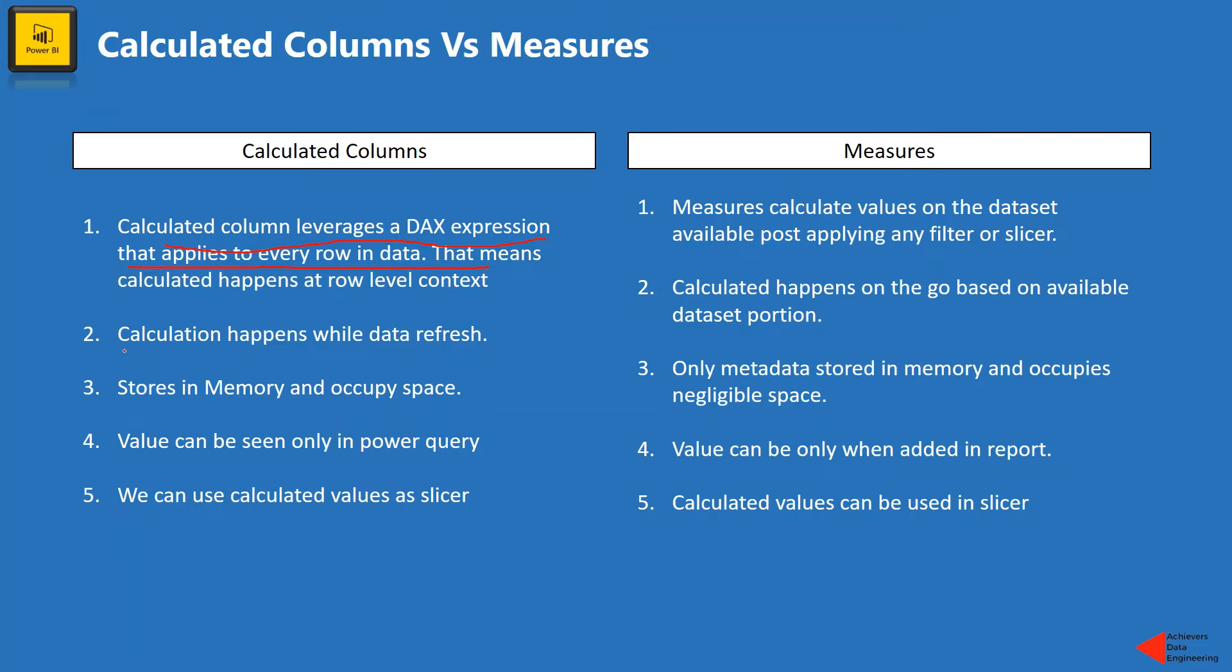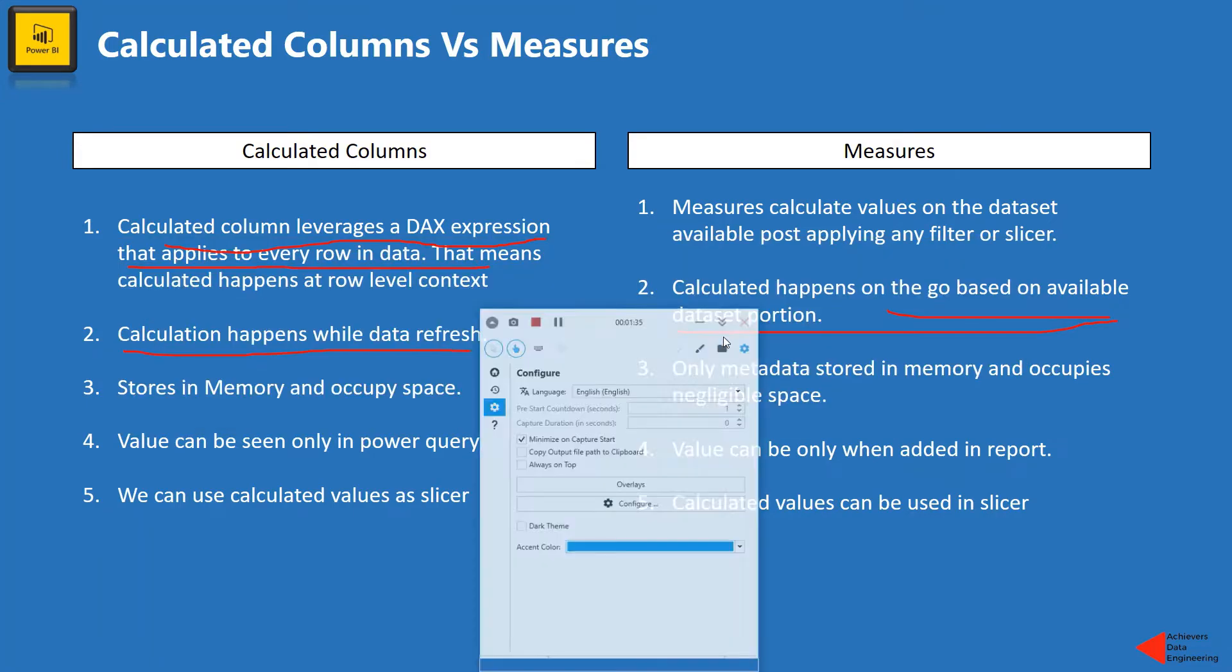Now, if you talk about calculation refresh, whenever we will refresh the actual data, so we'll go in the Power BI report and hit refresh. And at that point of time, as soon as new values or existing values will be created or updated, that calculated column values will automatically start refreshing. However, if you talk about measures, measures calculate the values on the go. So again, let me just take you on a Power BI report.